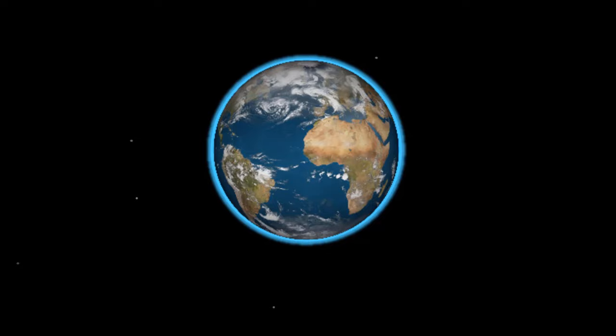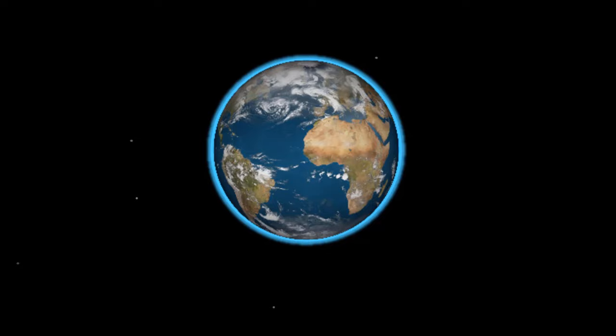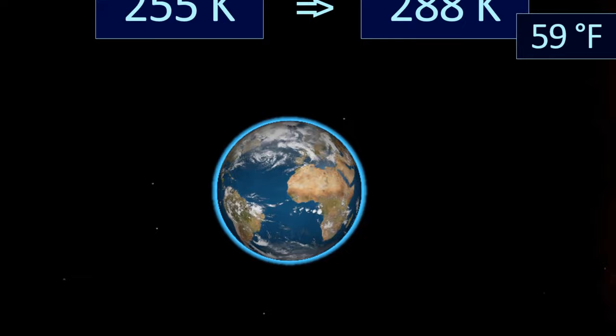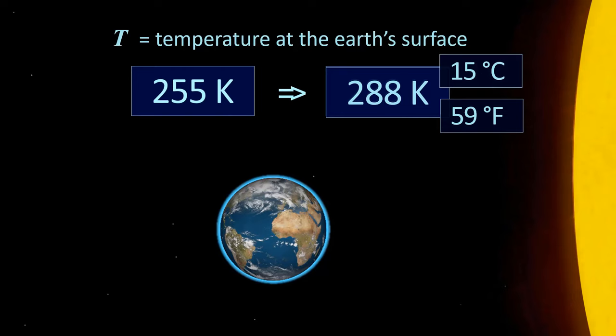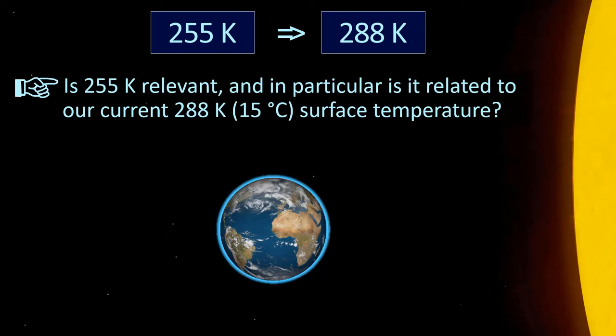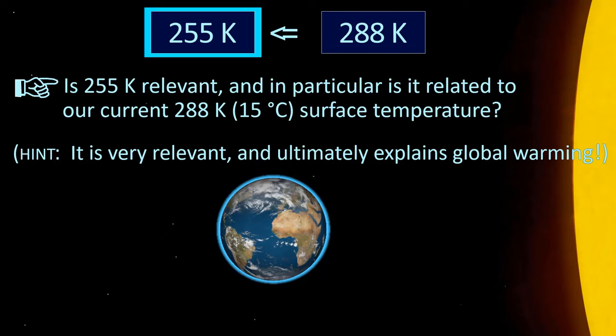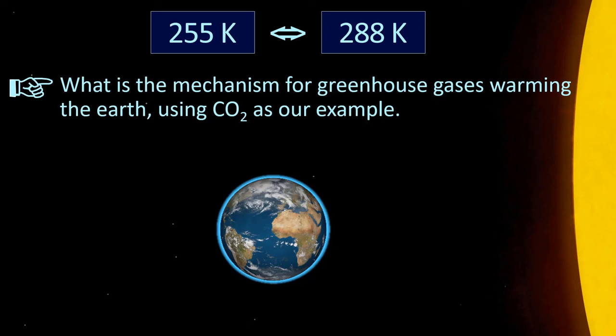There are molecules in the atmosphere called greenhouse gases that capture that infrared energy and give us an average surface temperature of 15 degrees Celsius, 59 Fahrenheit — keeping water in the liquid state and allowing life to emerge and evolve. So is 255 Kelvin relevant? Yes — it is very relevant and ultimately explains global warming. Let's look at the mechanism for greenhouse gases warming the Earth using carbon dioxide as our example, since it is the most significant contributor to warming over the past 150 years. Other greenhouse gases such as water, methane, nitrous oxide, and ozone all have the same warming mechanism.